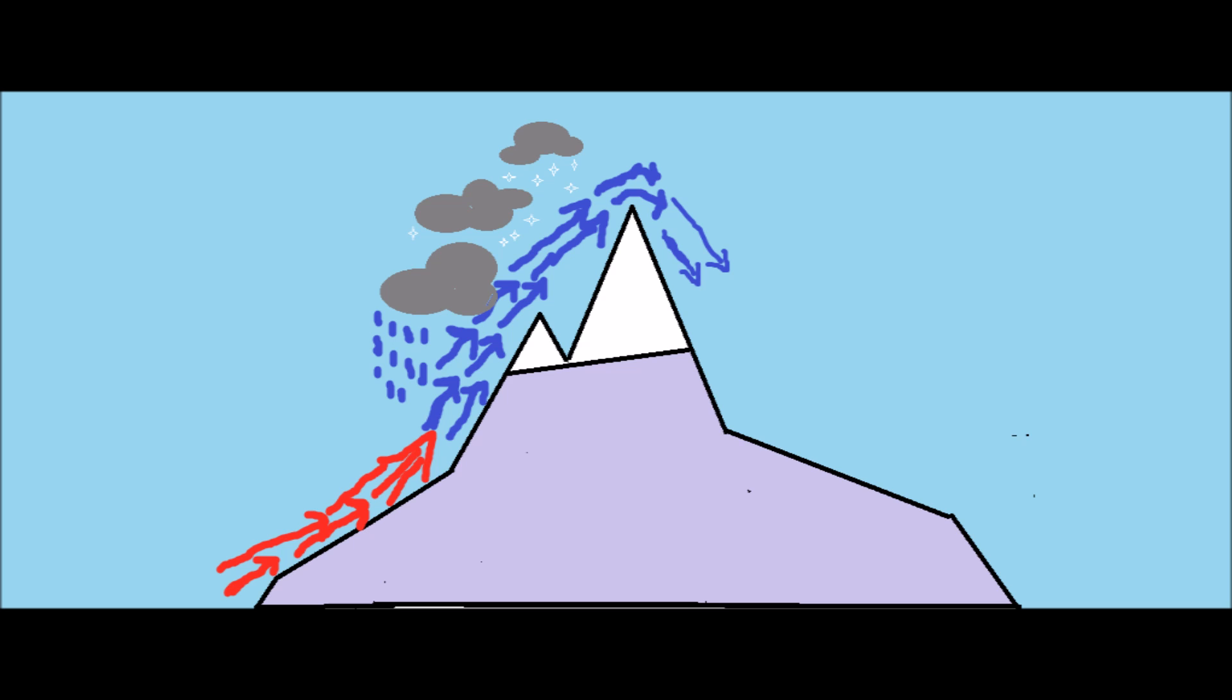When winds pass over the other side of the mountains, they are stripped of most of their moisture. As the winds descend down the leeward end of the mountains, they become warmer and drier. The air becomes warmer because of adiabatic compression.